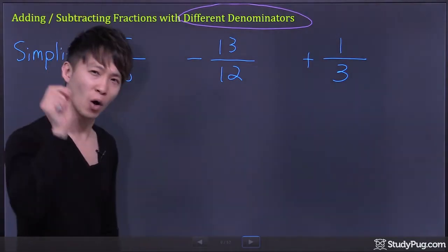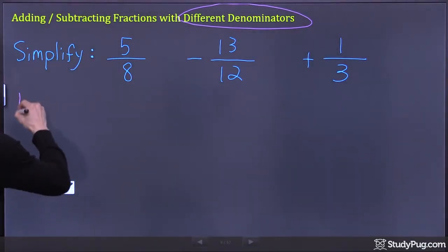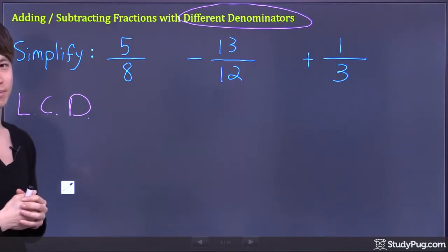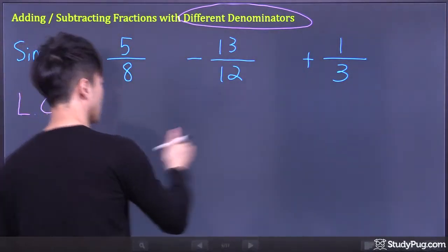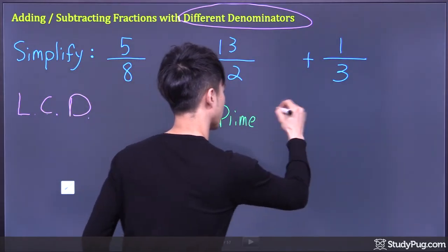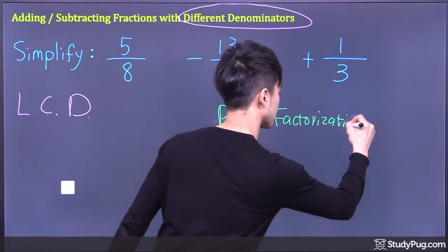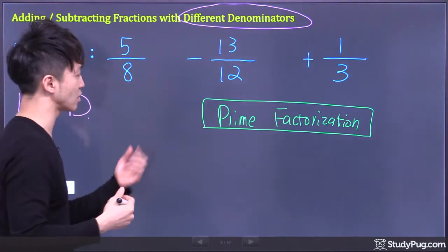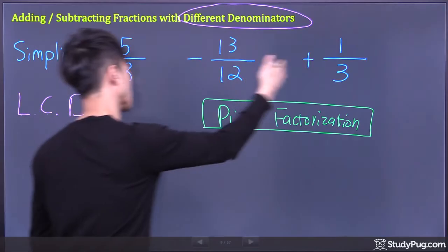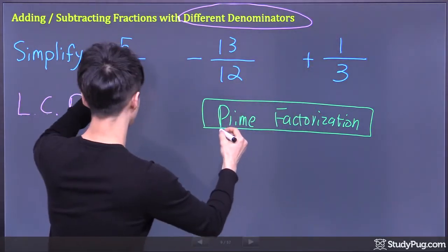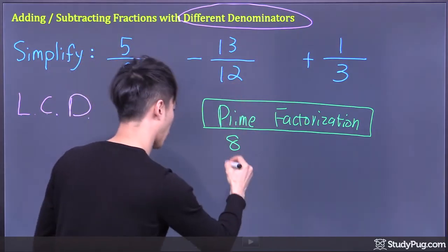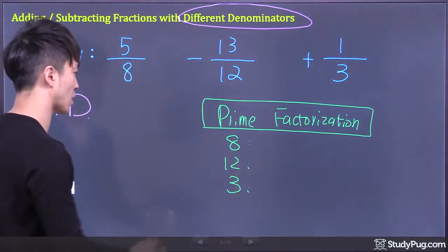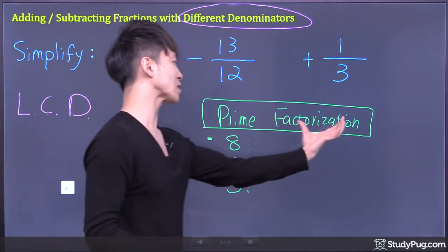So how do we find the lowest common denominator — the LCD, which stands for lowest common denominator? The method I'd like to use is called prime factorization, which means we have to find the prime factors first for each denominator. So here we have the first denominator is eight, the second denominator twelve, and the last denominator three.